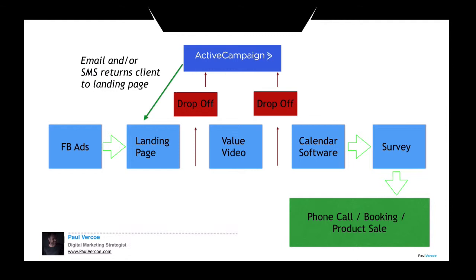If we didn't have things in place like marketing automation and retargeting — which I'll discuss in just a few moments — that client would be lost forever, and all that money you spent on your Facebook ads would be for nothing. With software like ActiveCampaign and MailChimp, we can keep the client coming back to the funnel and remind them of your product or service.